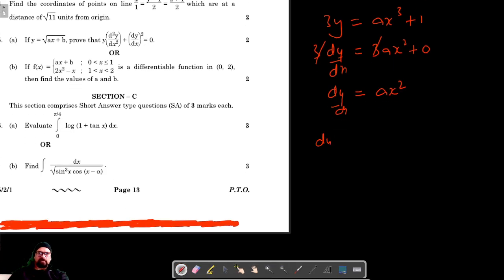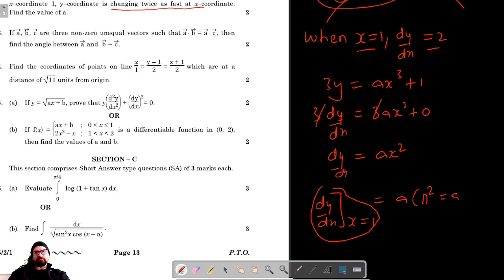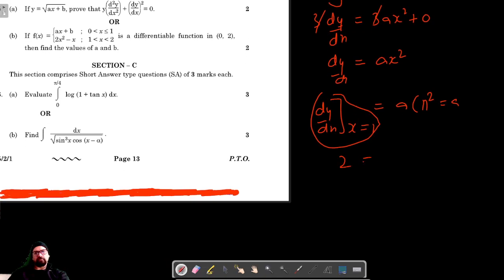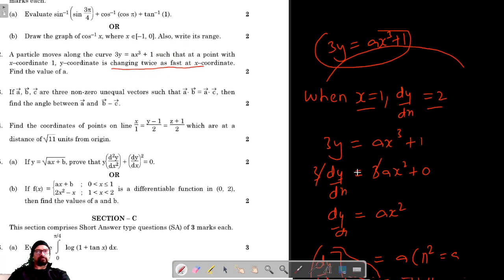Now, the value of the rate of change of y with respect to x when x equals 1 is a times 1² which is a. But this is given to us—it's given that when x equals 1, dy/dx equals 2, so this is 2, and the value of a is 2.